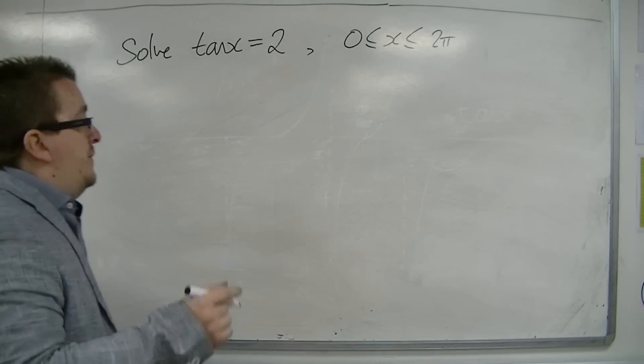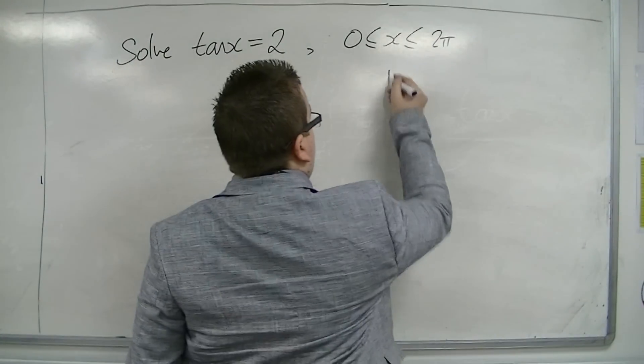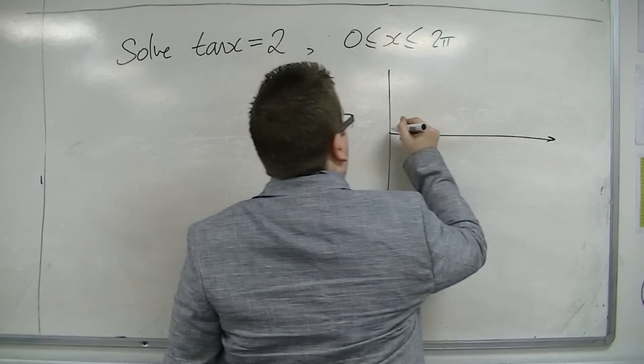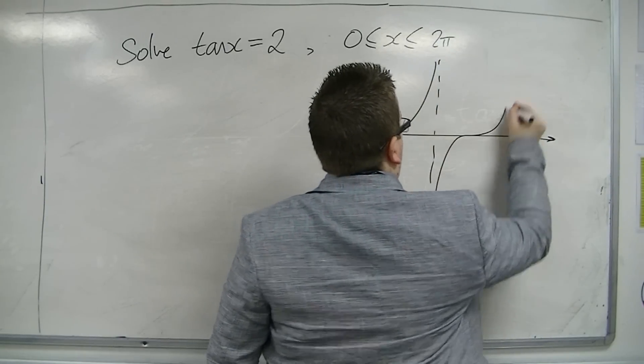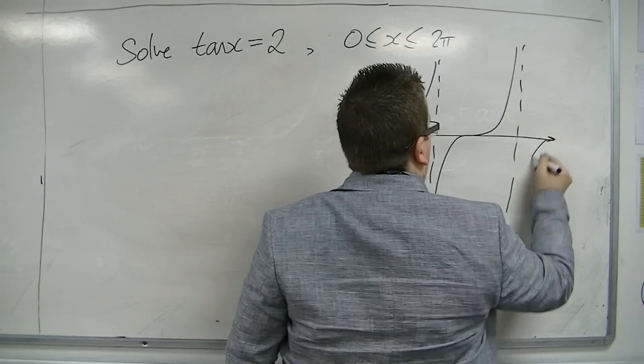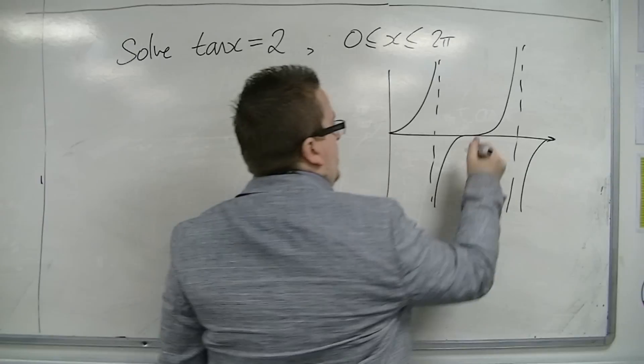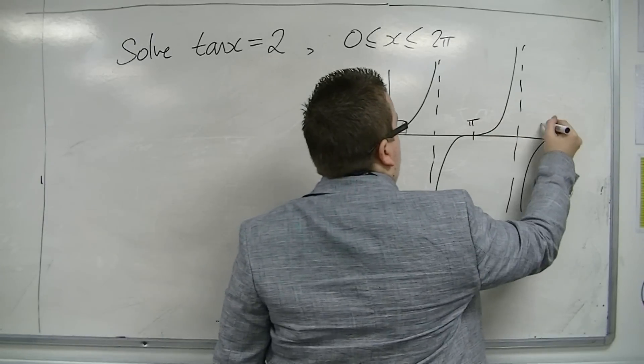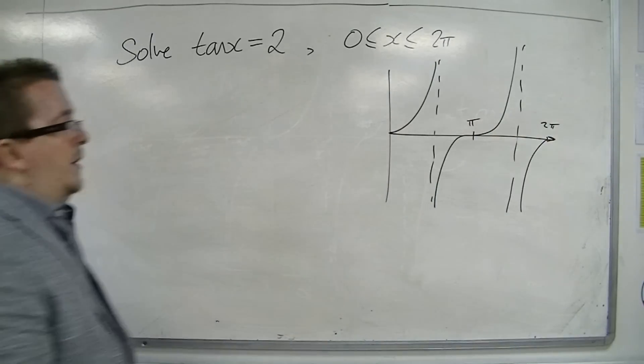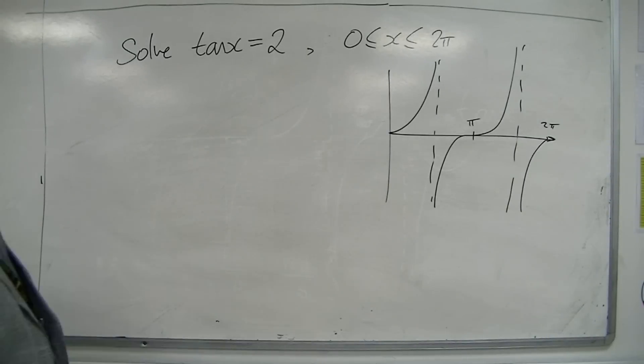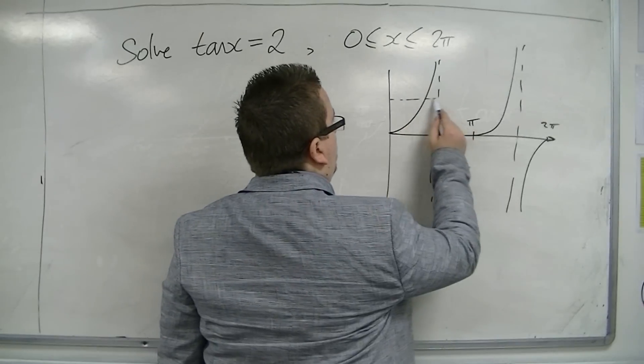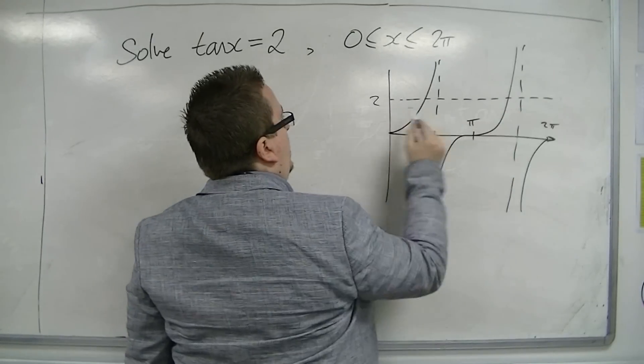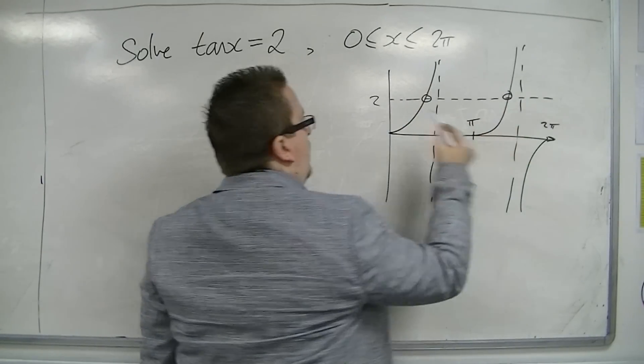So first of all, sketch tan. So this is what tan looks like between 0 and 2π. So there's π, there's 2π. And tan x equals 2, so 2 intersecting at 2 points on the curve.